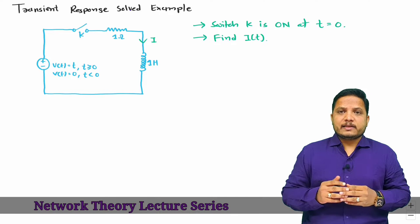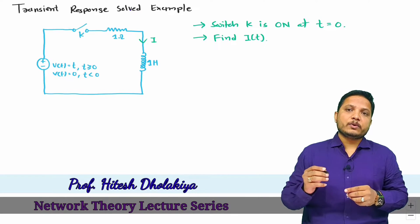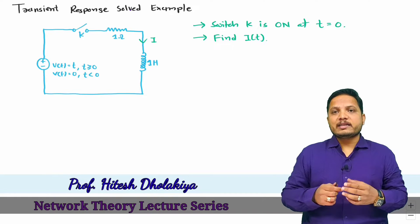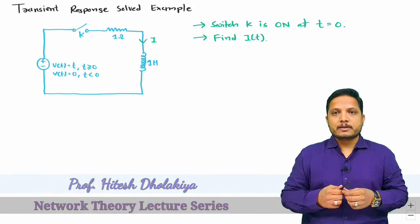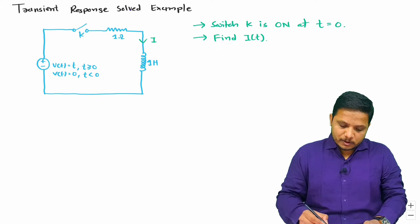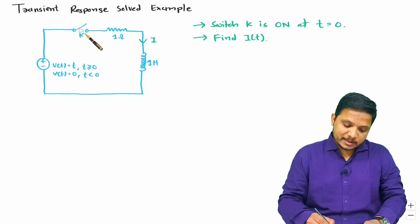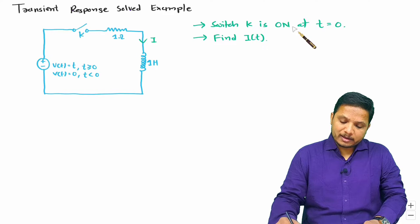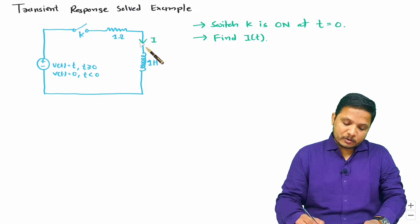Welcome to the network theory lecture series. Professor Ritesh Dholakya is going to explain one very interesting example based on transient response analysis. In this circuit, switch k is getting on at time t equals 0, and we are dealing with finding current i of t passing through this inductor.